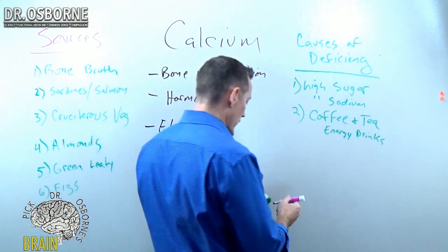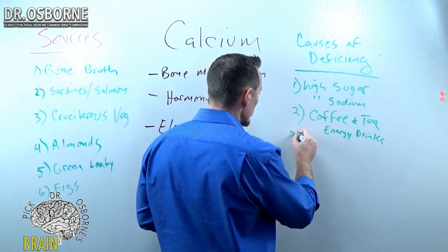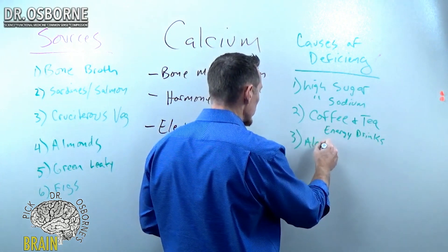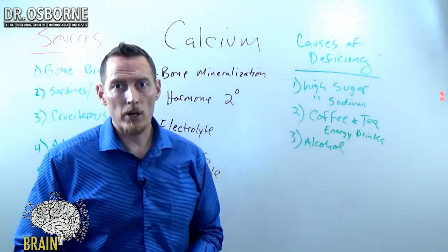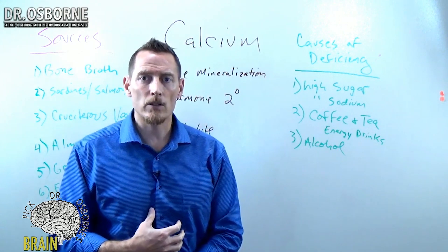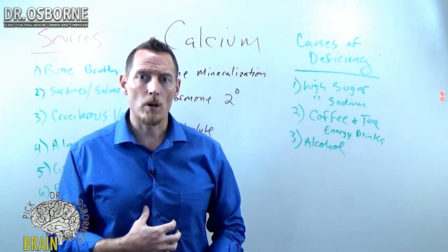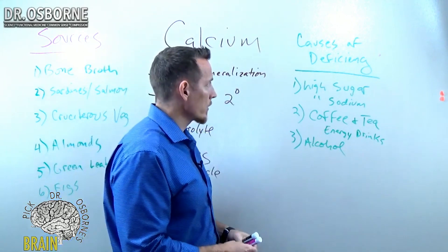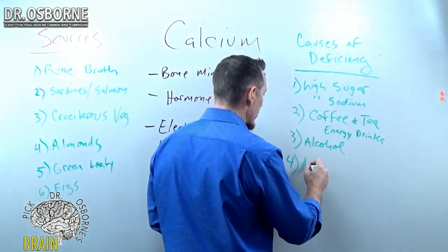Another one on this list is alcohol. Alcohol also works through a diuretic action, but also through the stomach. Alcohol can basically deacidify the stomach. You need stomach acid to absorb calcium. It's actually one of the other causes - we'll go ahead and put that in there - antacid medications.